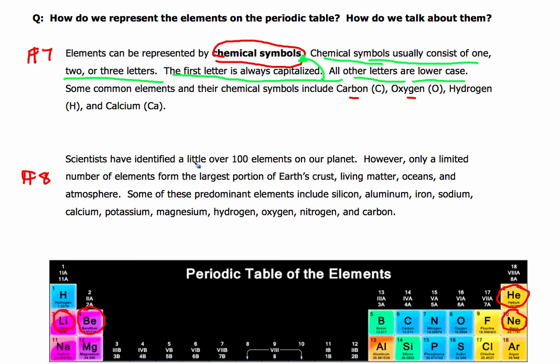Scientists have identified a little over 100 elements on the periodic table, elements that occur on our planet. Some we don't see in nature, but we predict they exist. However, only a limited number of elements form the largest portion of Earth's crust, living matter, oceans, and atmosphere. These predominant elements - meaning the main ones - include the first 18 that we're looking at in periods 1, 2, and 3.